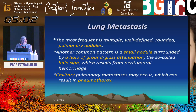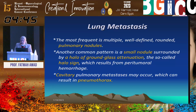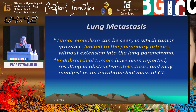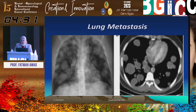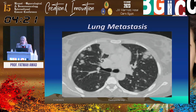Lung metastases from GTN appear as single or multiple pulmonary nodules showing peripheral hemorrhage — the ground-glass attenuation or ground-glass halo sign. They can be cavitary and may cause pneumothorax. Metastases can also involve the bronchi forming endobronchial masses with atelectasis, or present as pulmonary artery embolism. On chest X-ray and CT, mediastinal window shows pulmonary nodules, and lung window demonstrates the peritumoral ground-glass halo sign due to peritumoral hemorrhage.